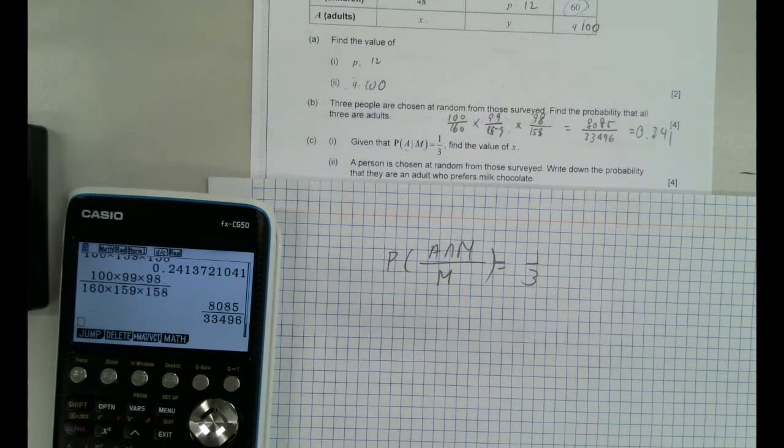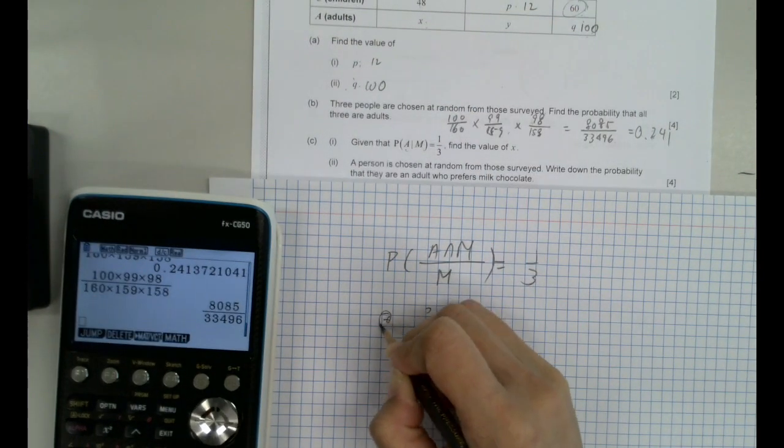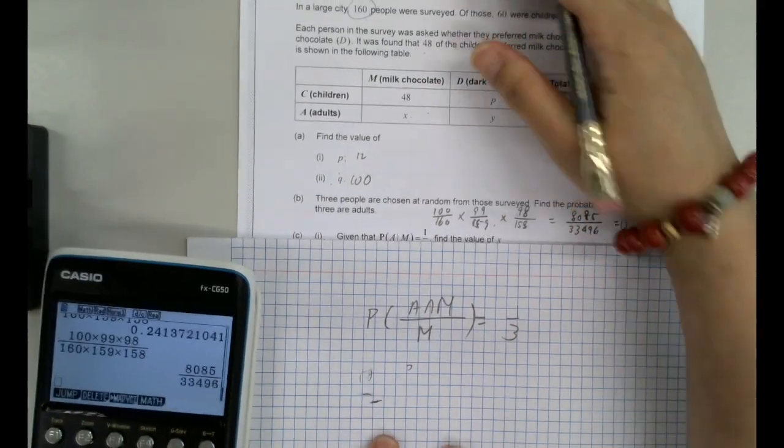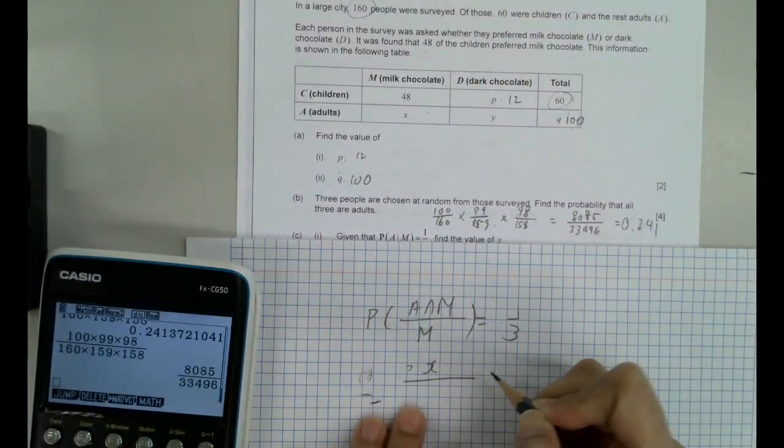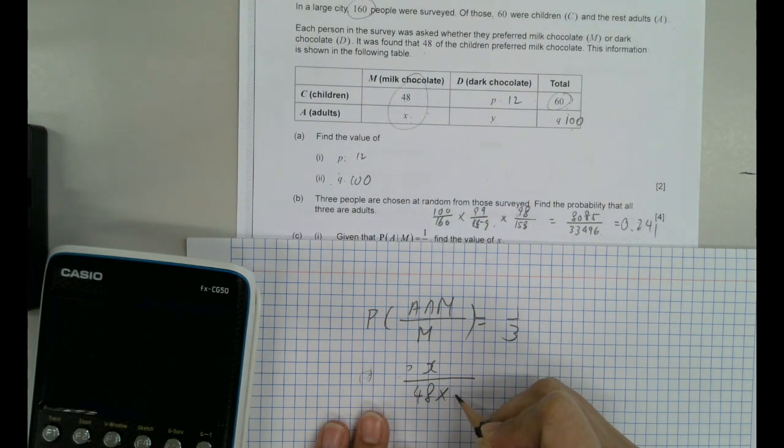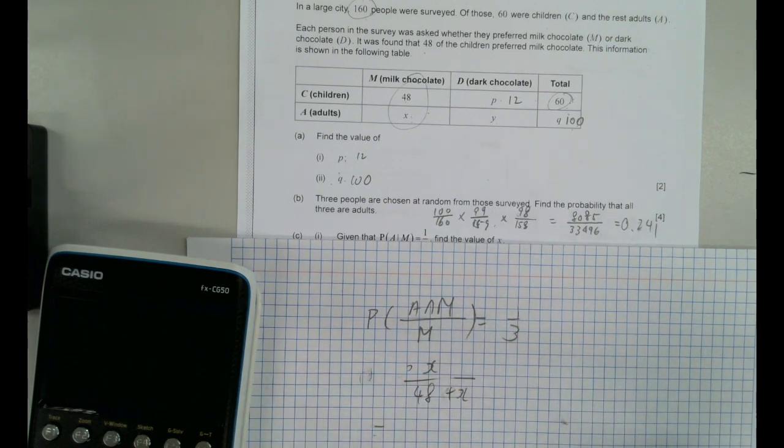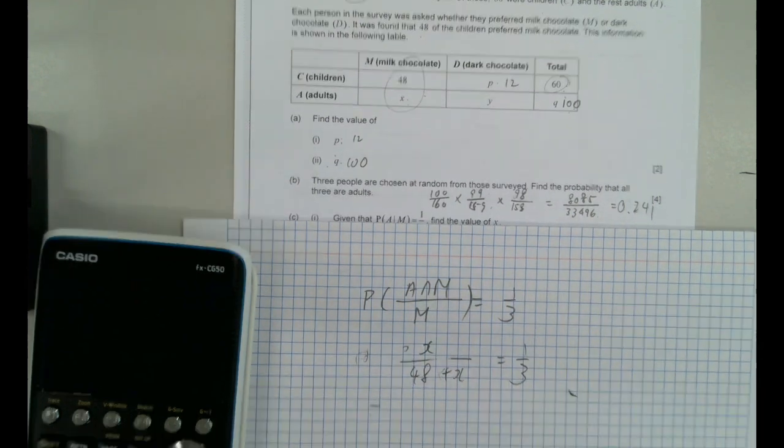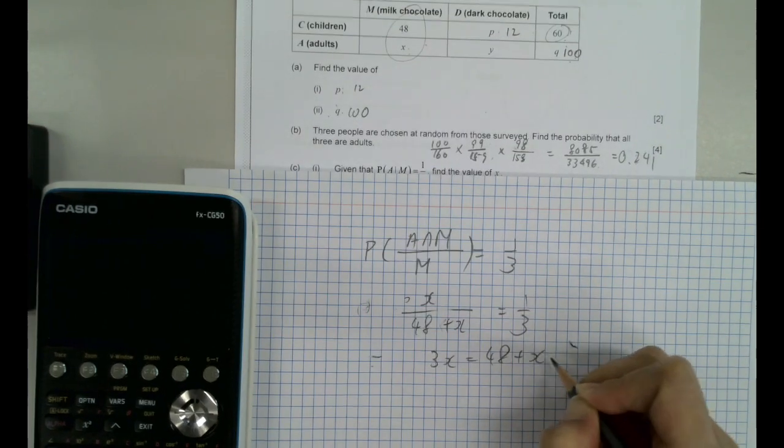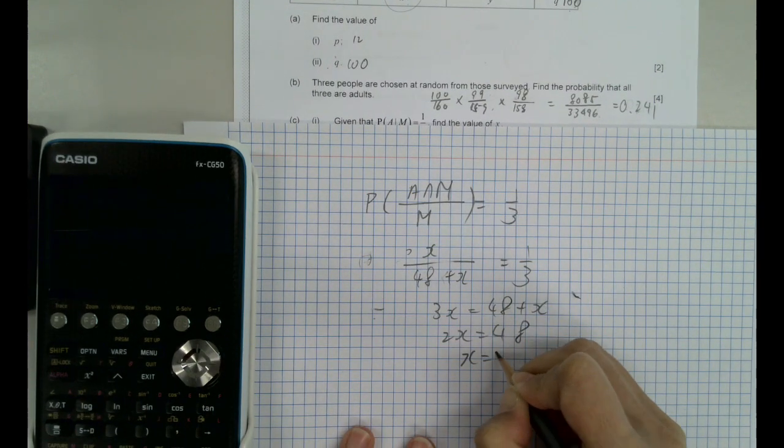Supposedly. So let's see, which means that this is X. Probability of adult A is X. We're looking at the table there. So it's X out of all the people who like milk chocolate. And then that equals to 1 over 3. So it's pretty straightforward. 3X equals to 48 plus X. 2X equals to 48. X equals to 24.